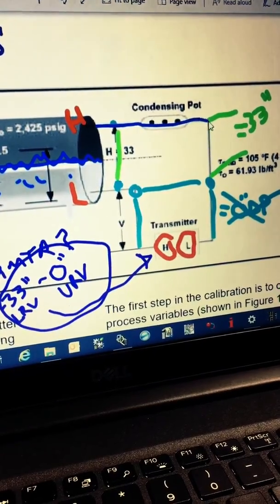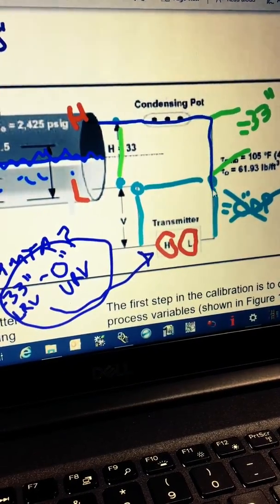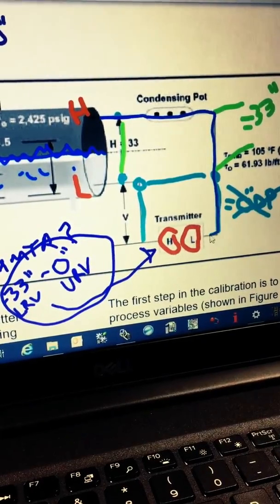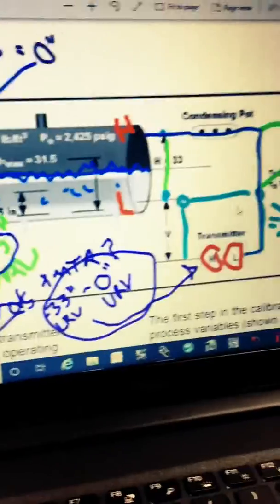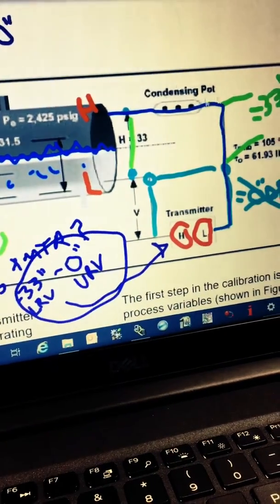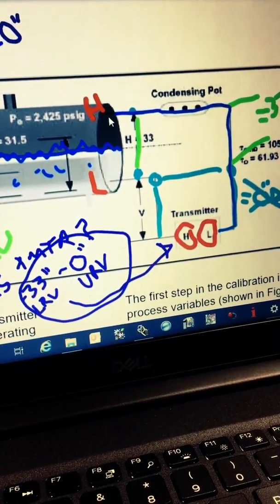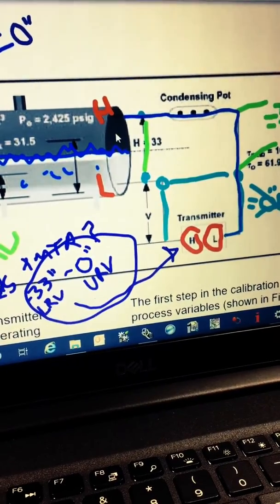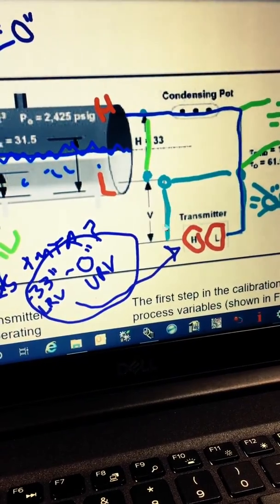So, you see we come through this condensing pot. And we have the reference leg here. And you always want to make sure that that reference leg is full of water before you ever fire up the boiler. Otherwise, you're going to have a really hard time controlling the drum level. So, fill up that reference leg.